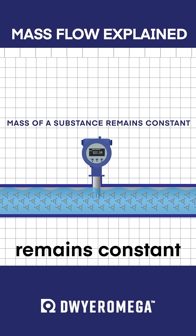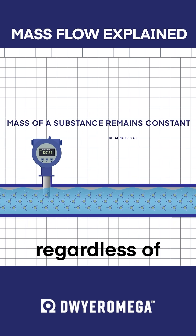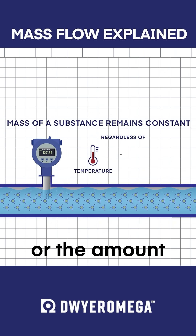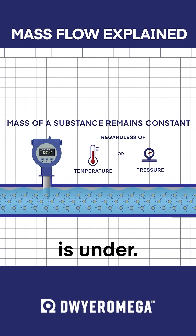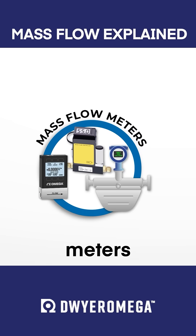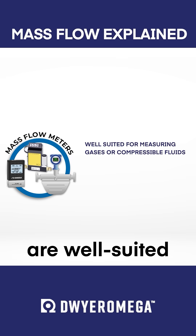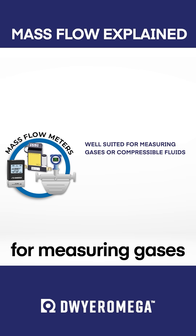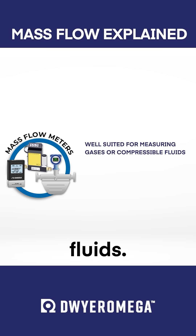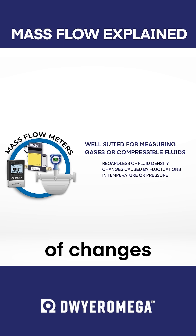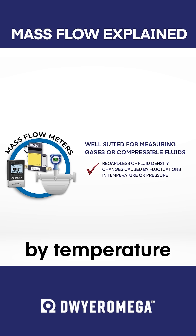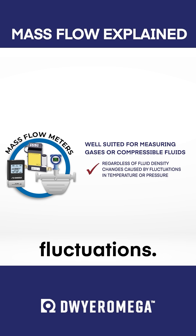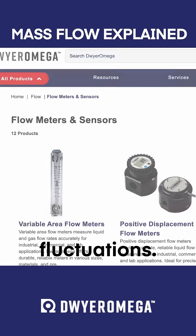The mass of a substance remains constant regardless of the temperature or the amount of pressure the substance is under. Mass flow meters are well suited for measuring gases or compressible fluids, regardless of changes in fluid density brought on by temperature and pressure fluctuations.